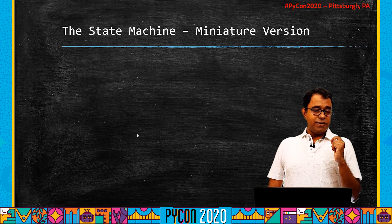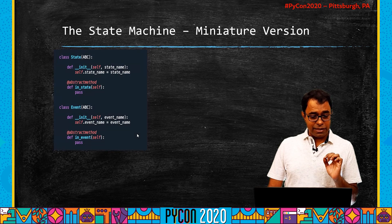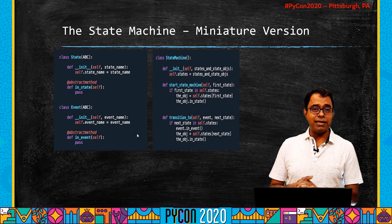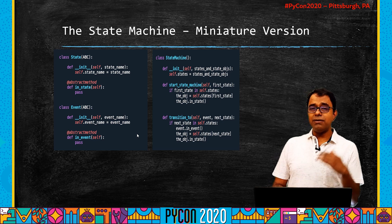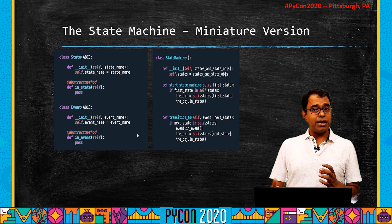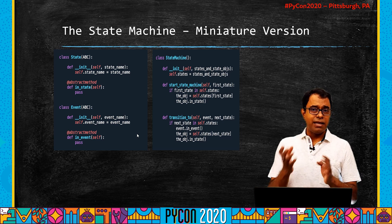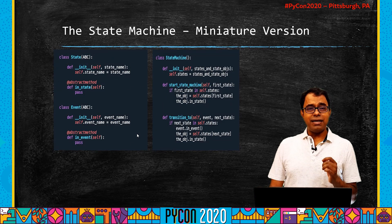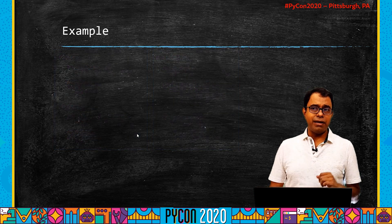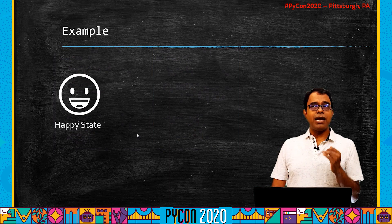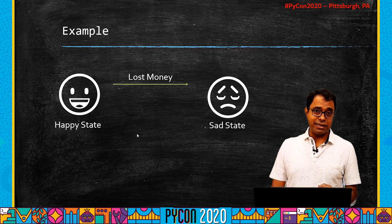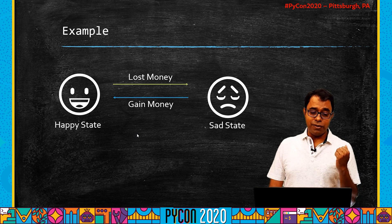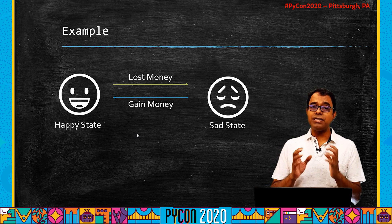Let's talk about the code for the state machine — a very miniature version just to give you a taste. We had state and event as abstract base classes and a state machine. It starts with a state and transitions to the next state, with multiple inner state machines. To understand the system, consider a simple real-time example: we are in a happy state, we receive an event called 'lost money', and we move to sad state. We receive 'gain money' and move back to happy state.